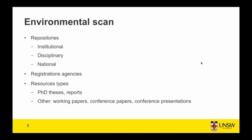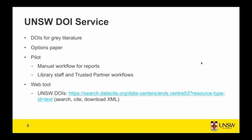In preparation for an options paper we looked at grey literature and DOI assignment in several repositories — whether institutional, disciplinary or national. We also looked at options for registration agencies and the resource types we would cover. One useful project was Unlocking Thesis Data, a JISC-funded project led by the Universities of East London and Southampton as well as EThOS, the National Thesis Service at the British Library, which outlines workflow options for assigning DOIs to theses. Another idea we incorporated was from the University of Southampton — a role called a trusted partner that allows certain staff, academics or faculty administrators, to authorise DOIs for their own research group.